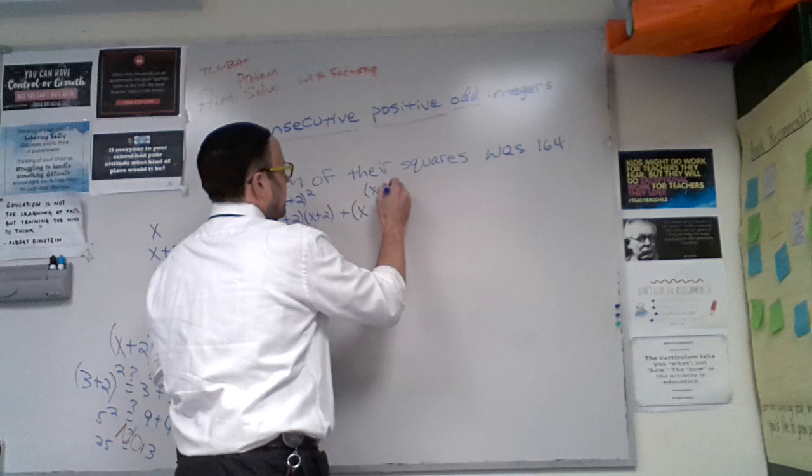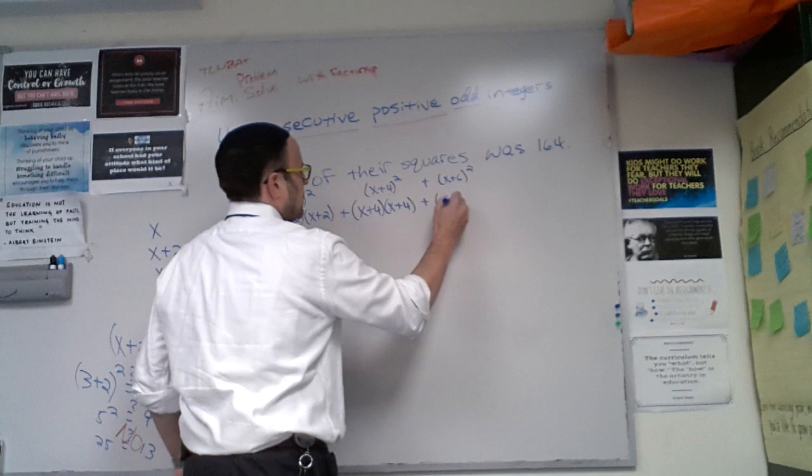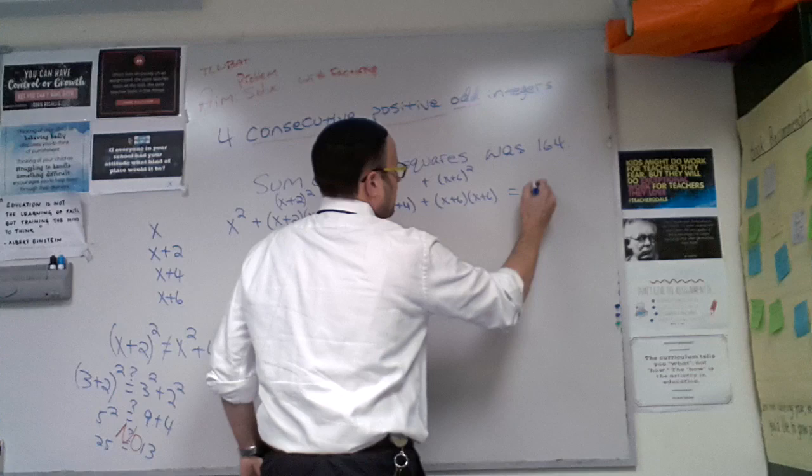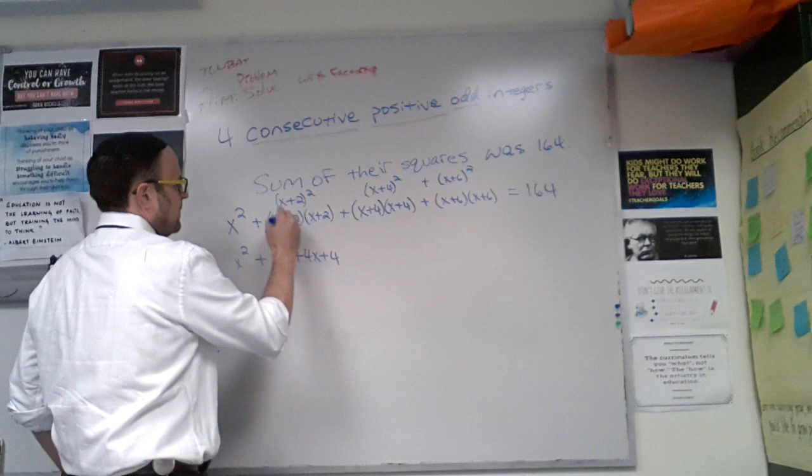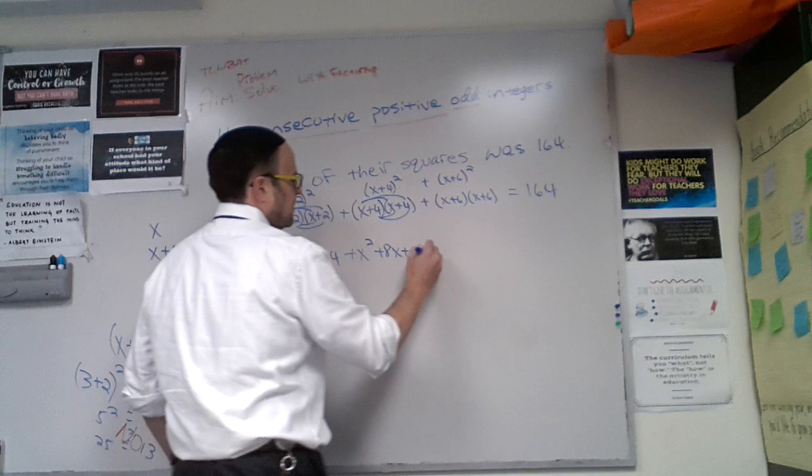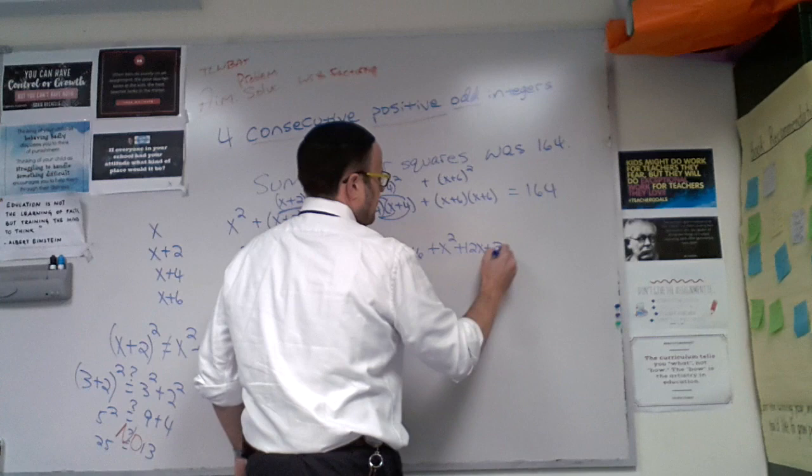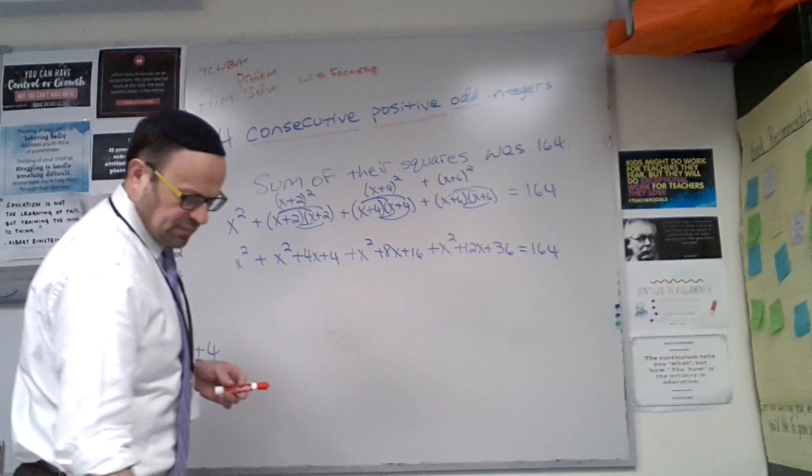This was x + 2 squared, x + 4 squared, x + 6 squared. So I have x², x² + 4x + 4, distribute x² + 8x + 16 plus x² + 12x. Remember distributing, foiling in each place. Good.